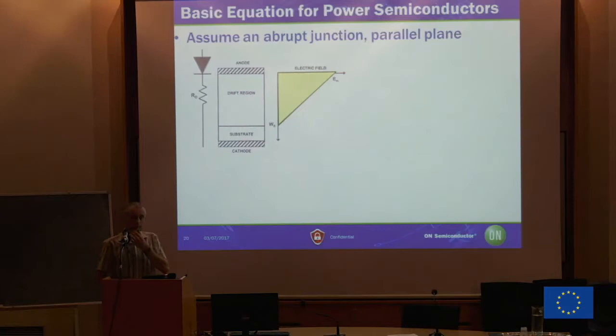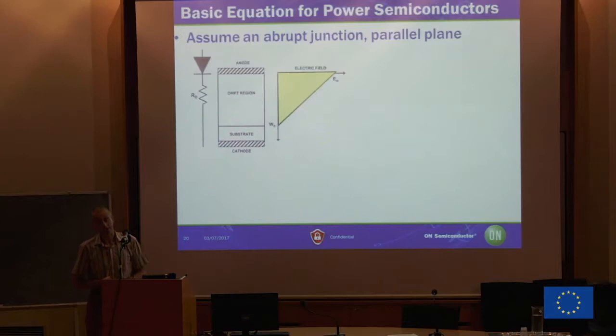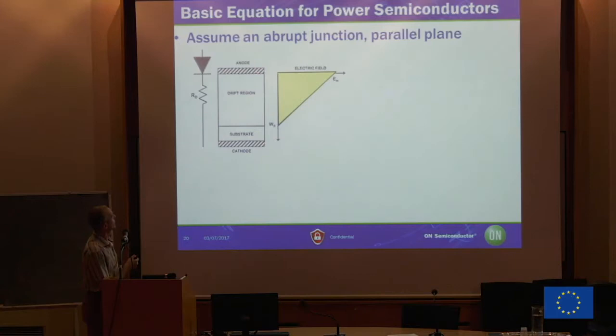Let's have a look at the basic equations for power semiconductors. We're going to do this simply — I'm not going to ask you to derive the equation, there's no time. I assume you all have a master's diploma and know the Poisson equation. We're going to look at the Poisson equation in a simple one-dimensional structure — a one-sided junction, specifically an abrupt junction where the depletion zone is built up on only one side of the junction.